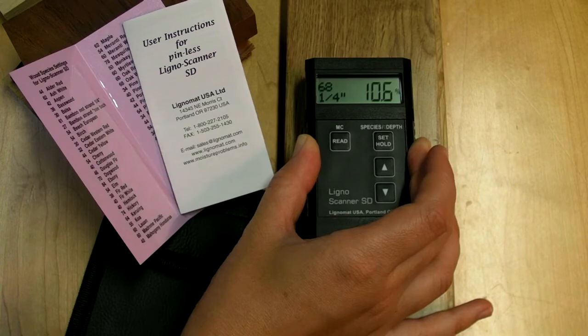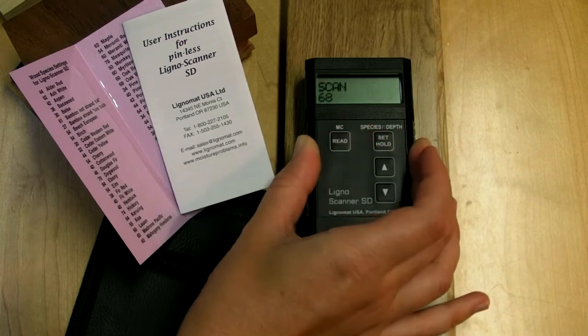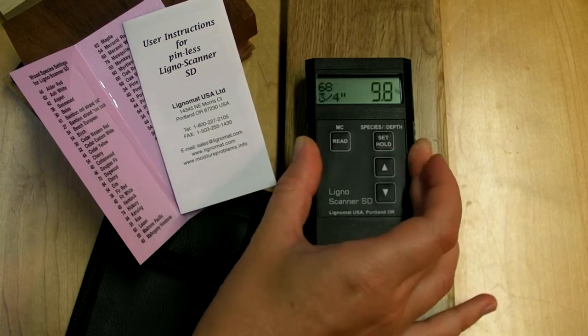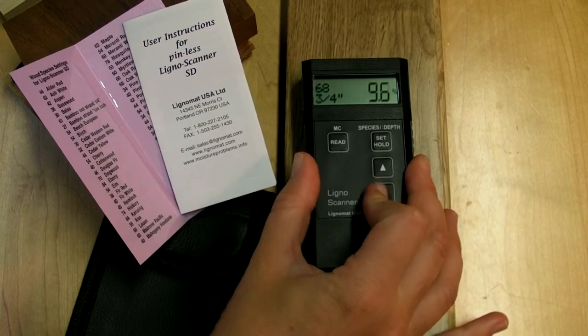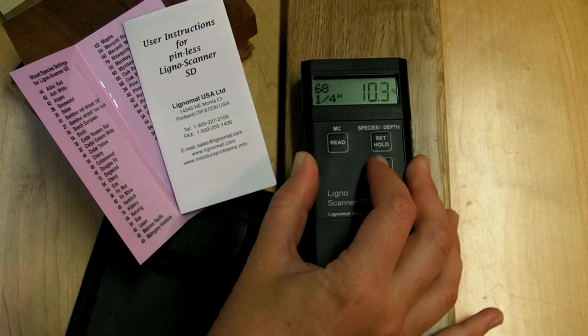For instance, place the meter on the board and take a reading. Without moving the meter, you can toggle between measuring depth 3 quarter by using the up arrow and 1 quarter inch by using the down arrow. Comparing those readings will indicate if a board is well seasoned or not.